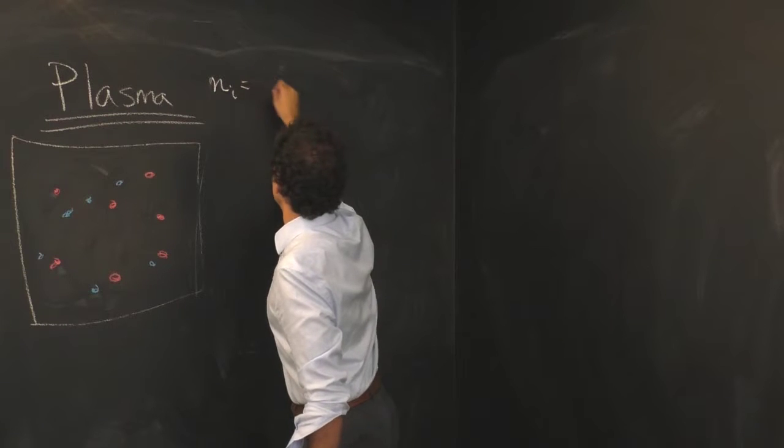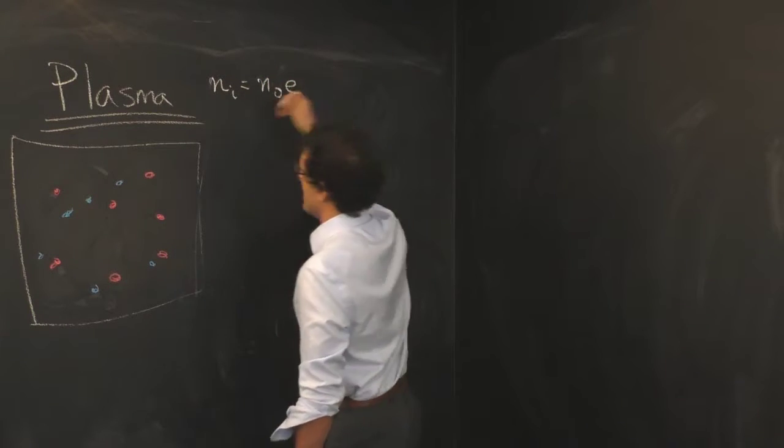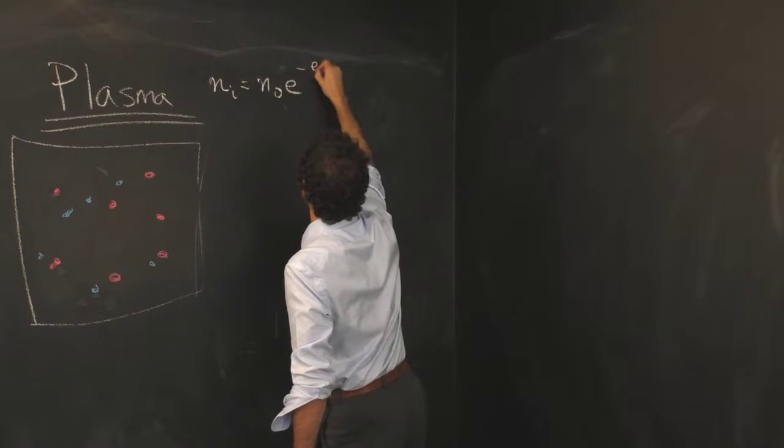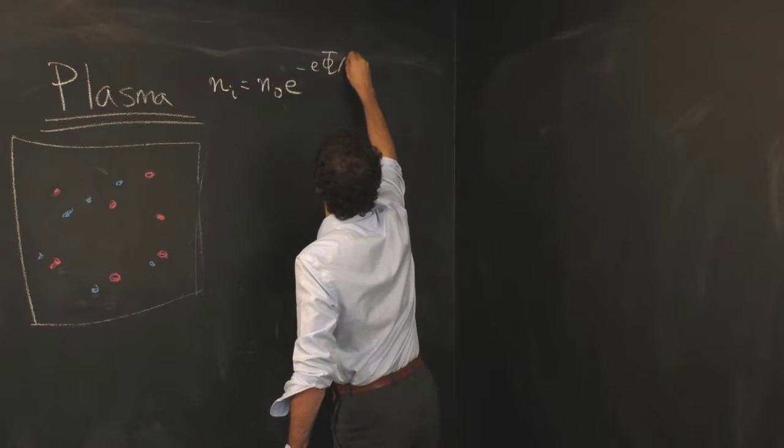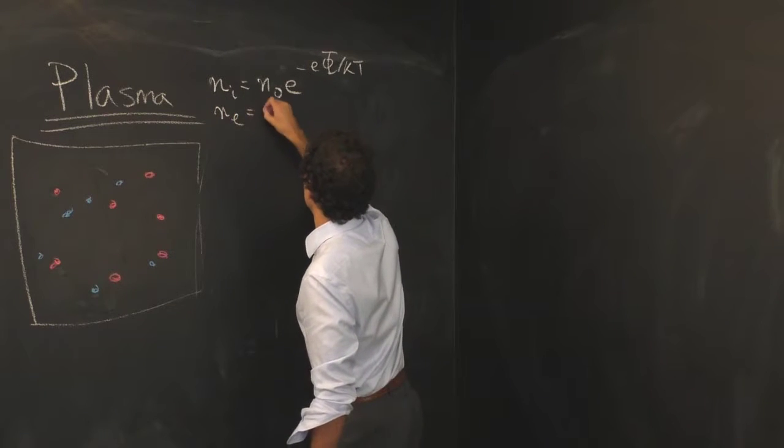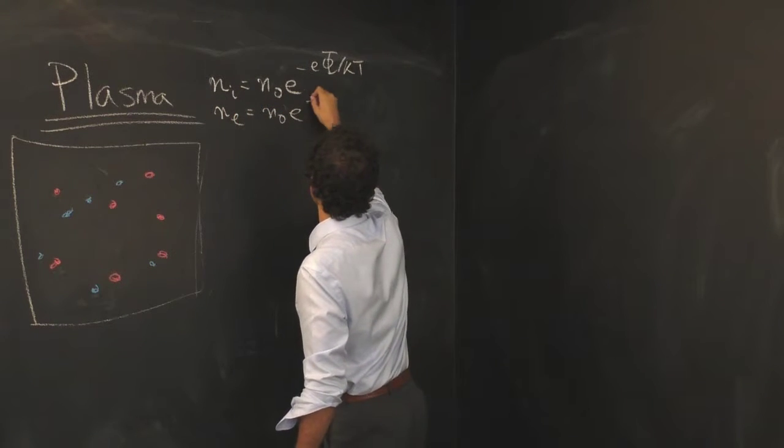I've told you how the different particles in the free plasma arrange themselves depending upon the local electric potential. Here's how the ions arrange themselves and here is how the electrons arrange themselves.